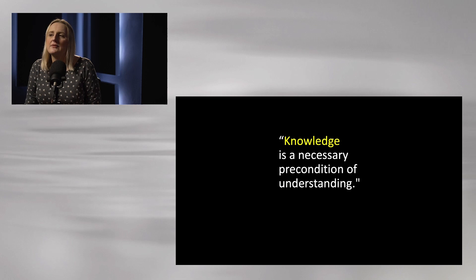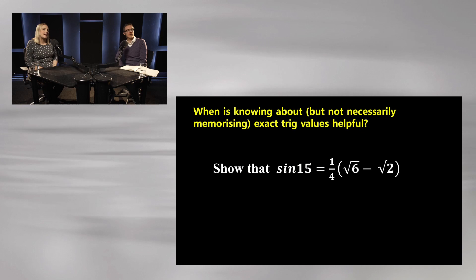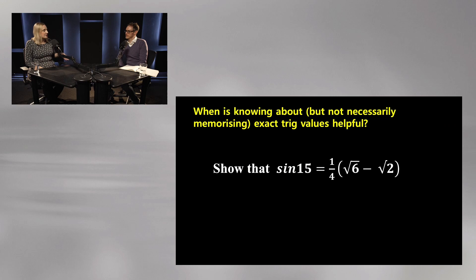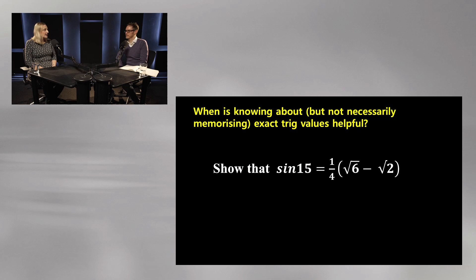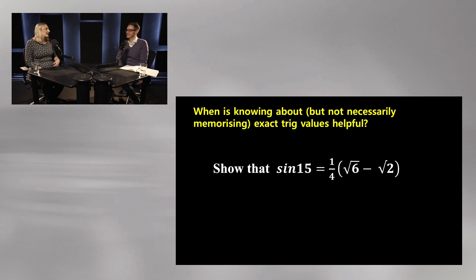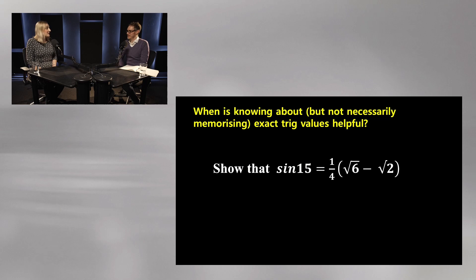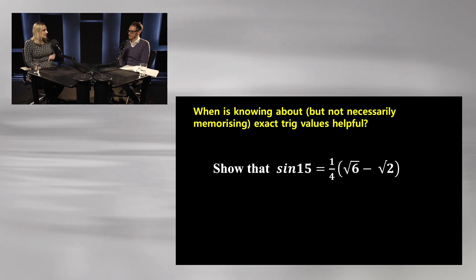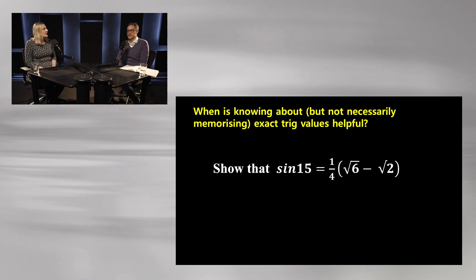Here's an old A-level question: 'Show that sin 15 equals one quarter (root 6 minus root 2).' Knowing about exact trig values gets you into that question, but memorizing them makes no difference. You need to write sin 15 as sin(60 − 45), then use the compound angle formula — which was provided in the exam. You didn't need to know the value of sin 60 or sin 45; you needed to know they were exact values and that using them would give you numbers you could work with. That's the difference between knowing and memorizing.